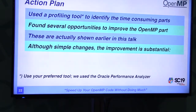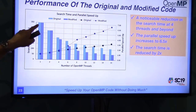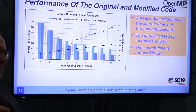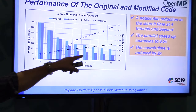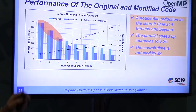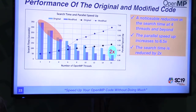Although the changes were small, the improvement is rather dramatic. The dark blue shows the modified code. The single-thread search time is the same — always a good sanity check. On two threads the time is also the same, which goes back to what I said about scalability. But then it starts taking off, and ultimately the search time is two times faster. The parallel speedup goes up to almost 7 instead of 3.2. Really low-hanging fruit.